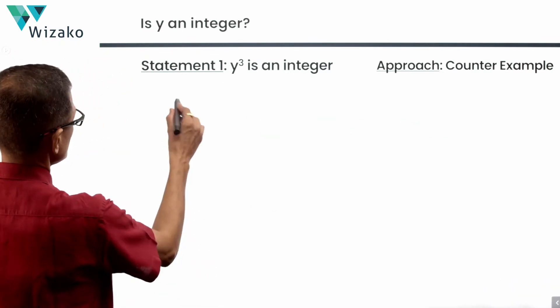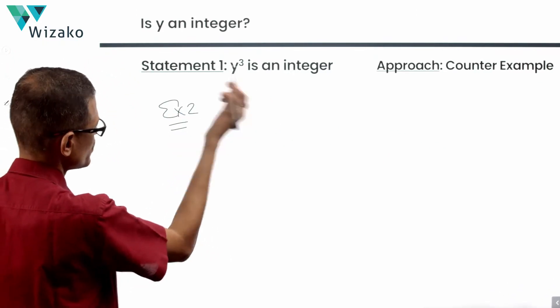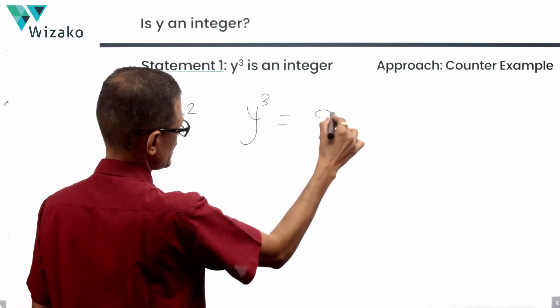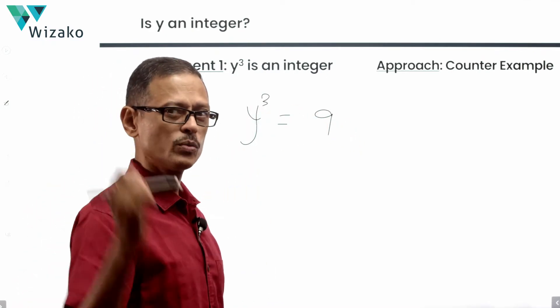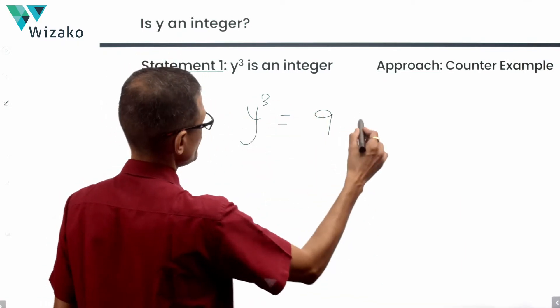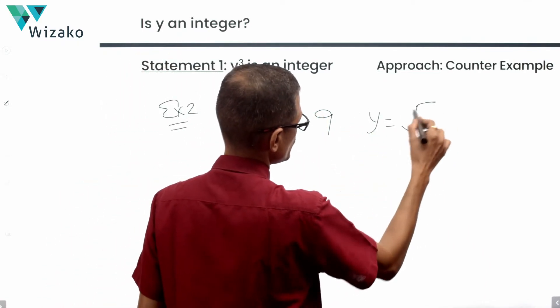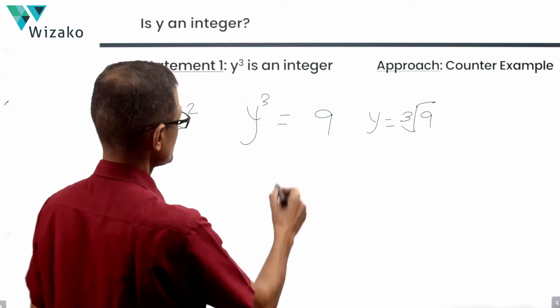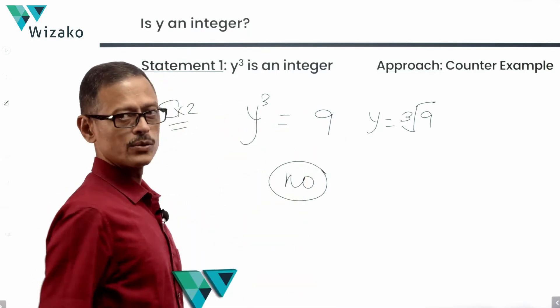Let's look at a counter-example. Counter-example, just add 1, 2 or subtract whatever you like. Let's say y cube is equal to 9. Y cube, not y square. Y cube is equal to 9. Is y cube an integer? Yes. What is the value of y? Y is the cube root of 9. Cube root of 9 is certainly not an integer. The answer to the question, if y cube is equal to 9, is no.